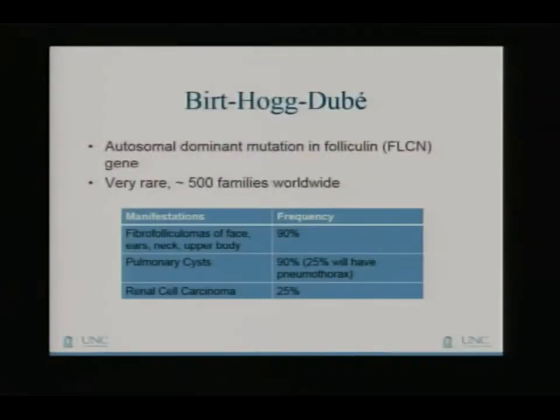Birt-Hogg-Dubé, or BHD, is exceedingly rare — roughly 500 families worldwide, though with extraordinarily rare genetic mutations it's almost impossible to know the exact number. In my clinical practice, I have about five patients with this mutation. It's an autosomal-dominant mutation on the FLCN gene. Manifestations include fibrofolliculomas — skin lesions on the face — cysts in the lungs, and kidney cancer, though kidney cancer is actually not as common as the other manifestations in folks with this mutation.